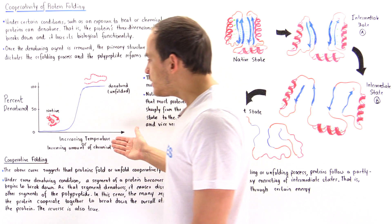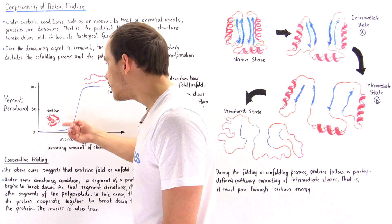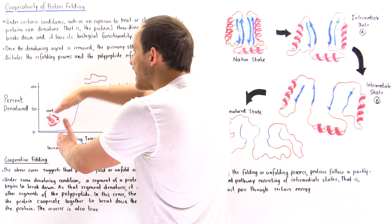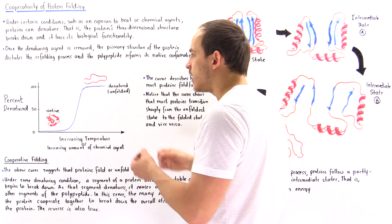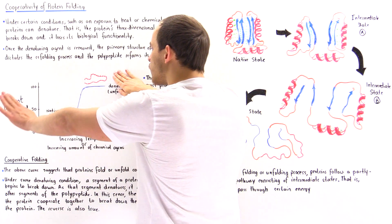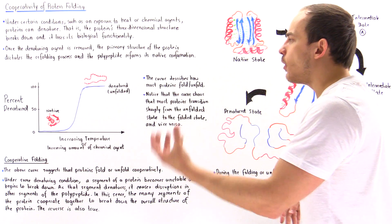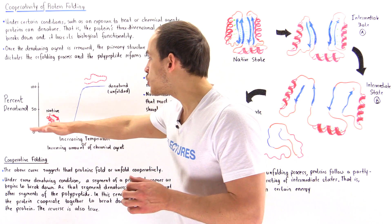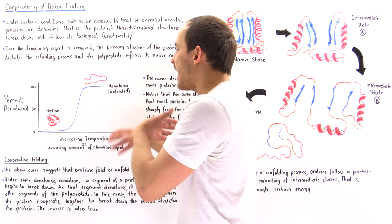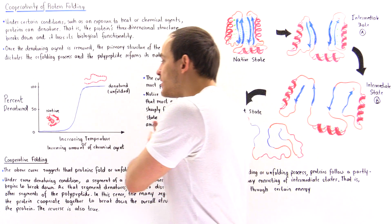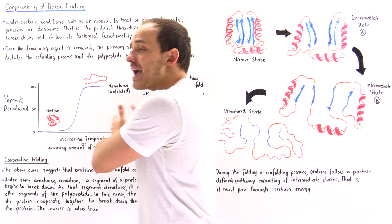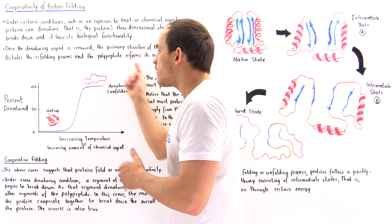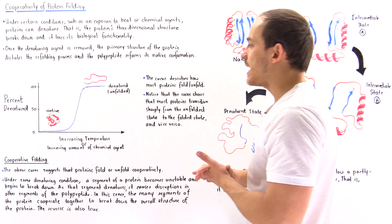As we begin to increase temperature or the amount of chemical agent, initially nothing much happens — only a small amount of protein begins to unfold. But as we approach a critical region, we see a sharp increase in the percentage of proteins that have denatured, until all proteins exist in their fully unfolded denatured state. The result is a sigmoidal curve, showing a sharp transition from the folded to unfolded state — and going the other way, a sharp transition back to the fully folded active state.